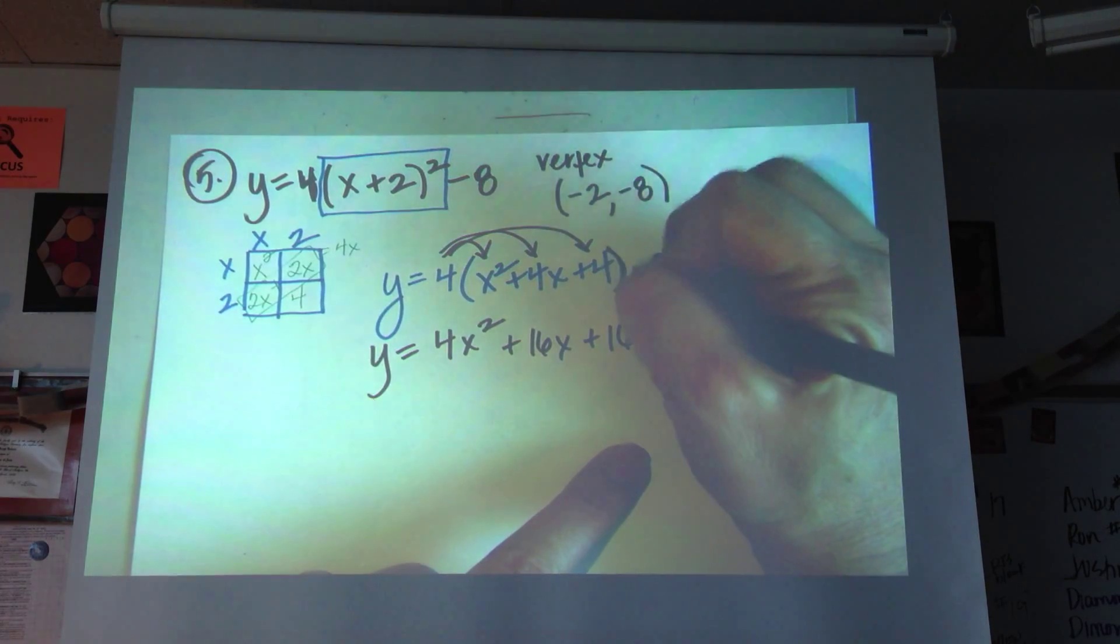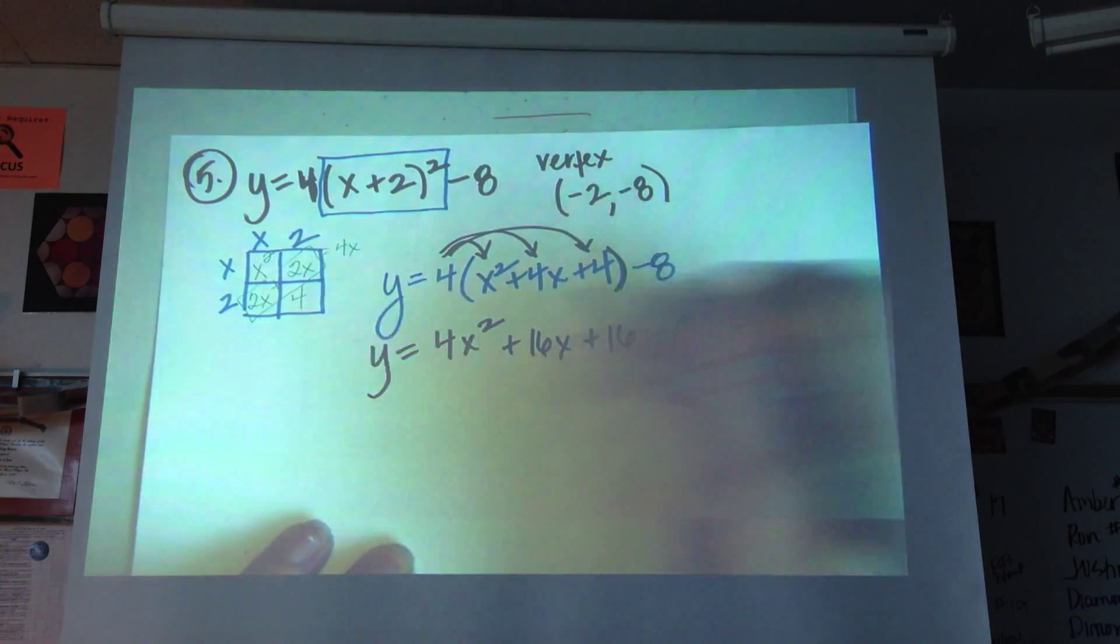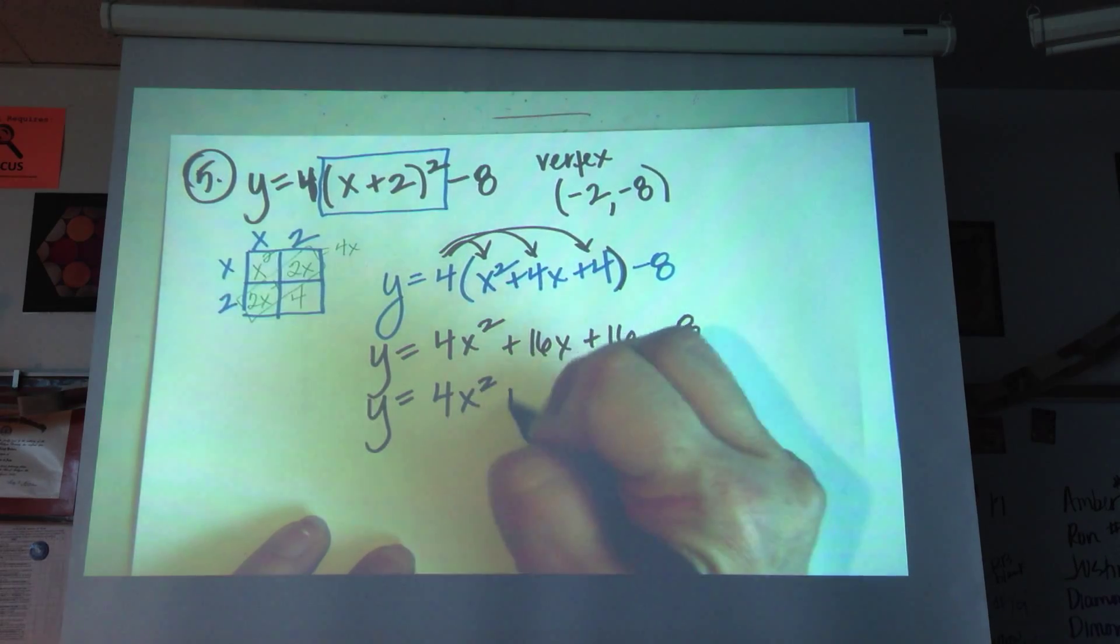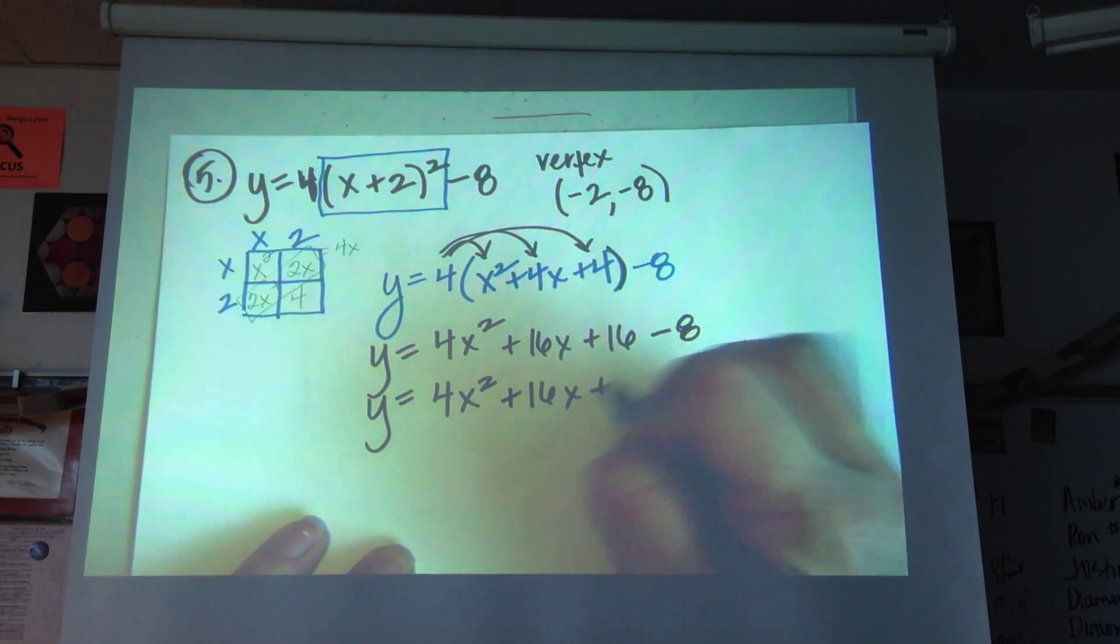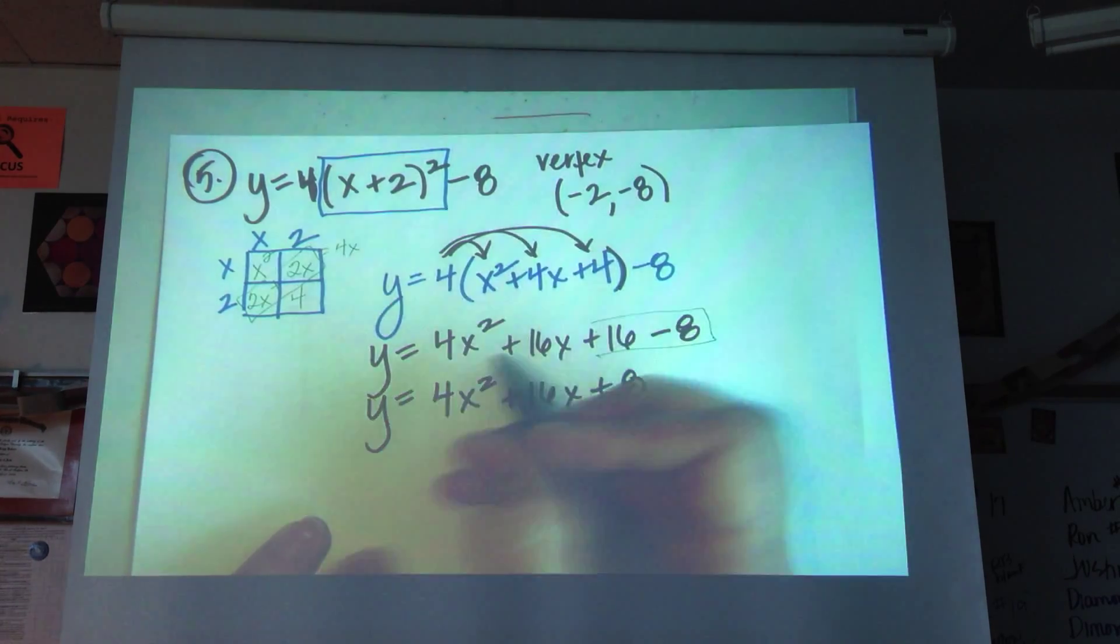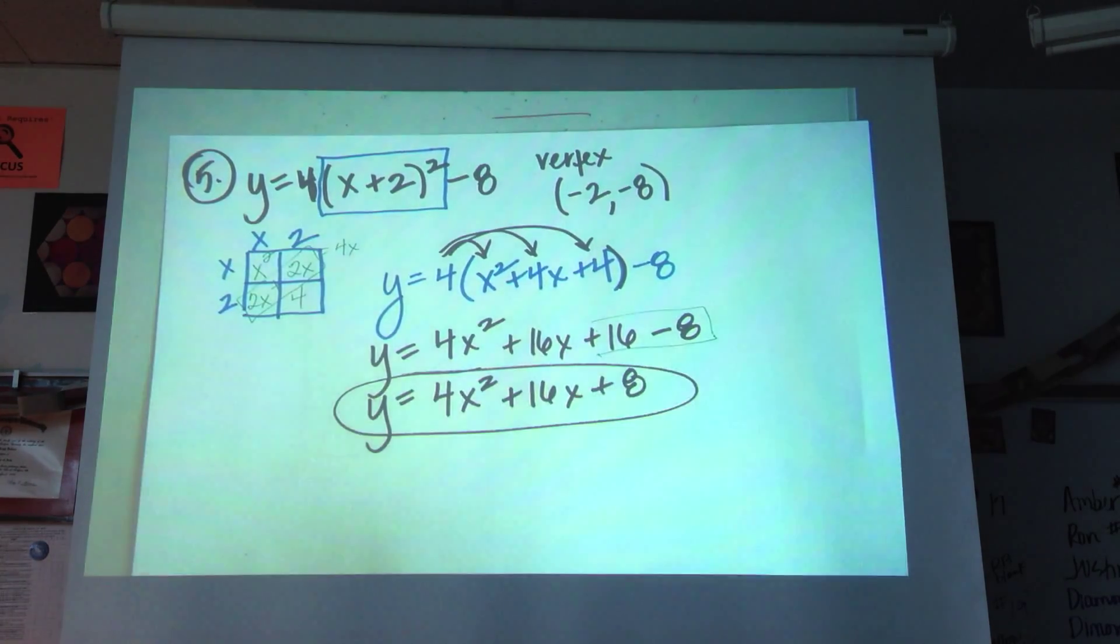My parentheses ended. So now I just drop my minus 8 down. y equals 4x squared. If I just combine those two like terms, the 16 minus 8 is going to give me plus 8.